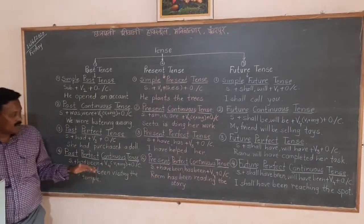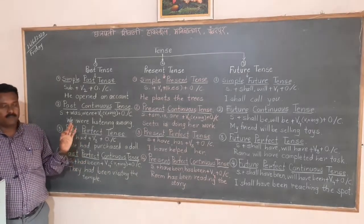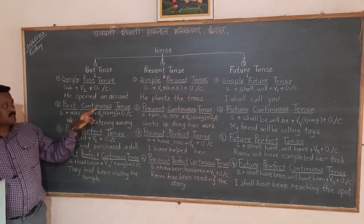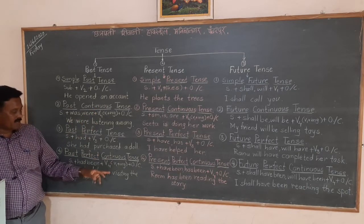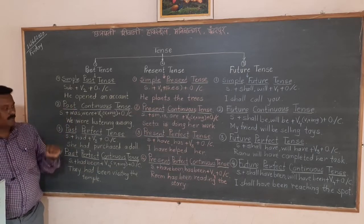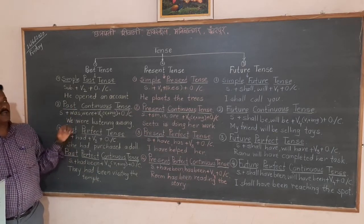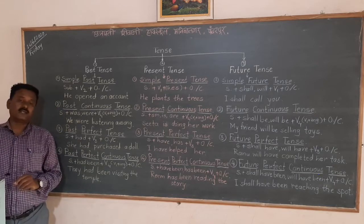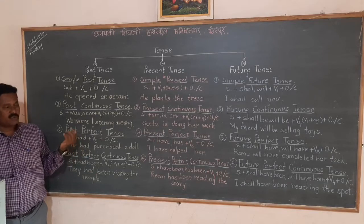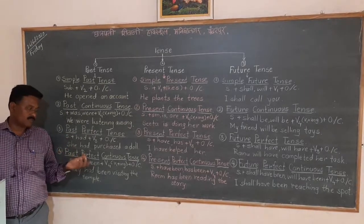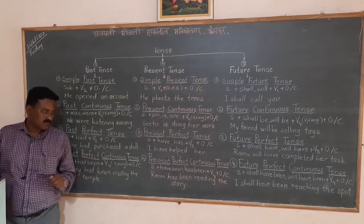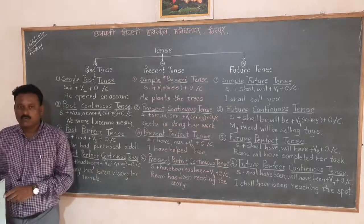In perfect continuous tenses, the same pattern applies: in past, 'had been' is used; in present, 'has been' is used; in future, 'shall have been' is used — only auxiliaries are changing, and the main verb form stays the same. In this way we can translate any sentence into English easily. If you can change those sentences easily, you can speak English very well — it is a very easy language. Thank you very much.